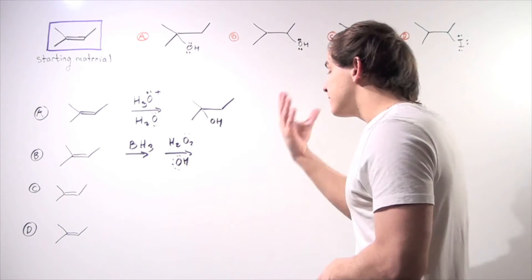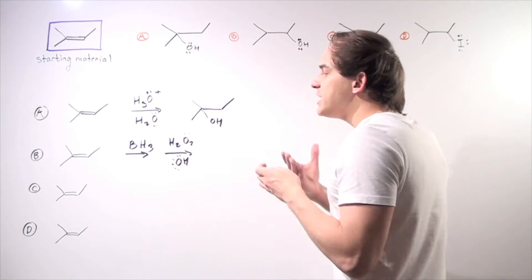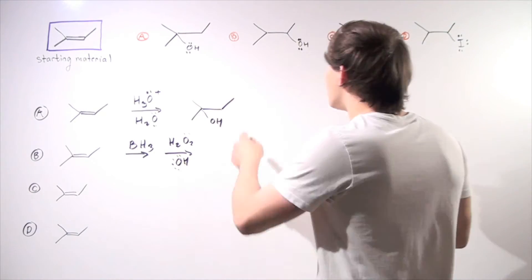And then the BR3 reacts three times with this hydrogen peroxide to produce our BOR3. And then finally, in the final step, three of these OH molecules react to produce our final product.